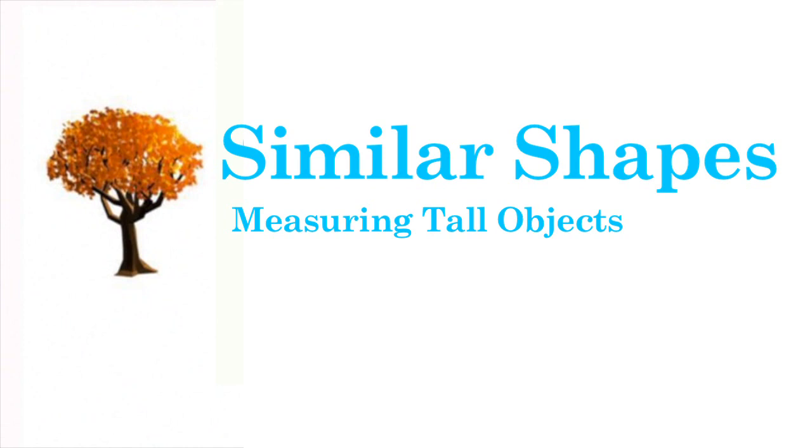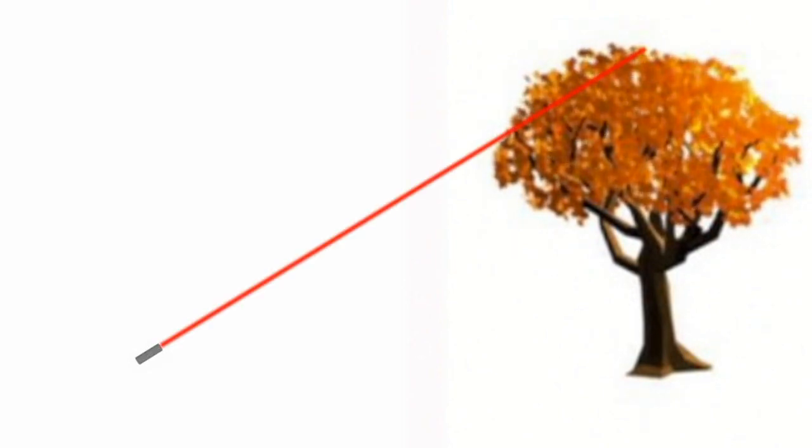Using similar shapes allows us to find the measurement of big objects by comparing them to smaller, similar objects. For example, if we wanted to know the height of this tree, we could shine a laser at the top of the tree from the ground.